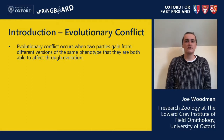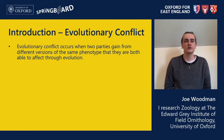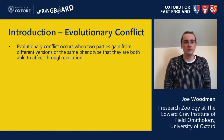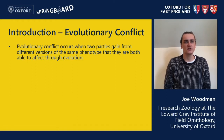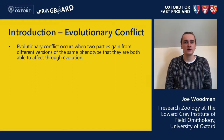So what is evolutionary conflict? Evolutionary conflict occurs when two parties gain from different versions of the same phenotype that they can both affect through evolution.